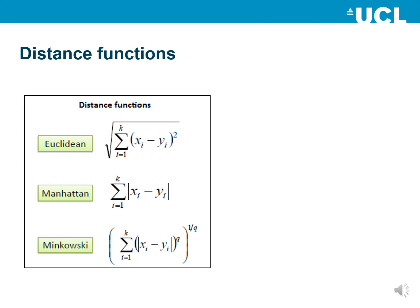The Manhattan distance is also quite often used. The Minkowski distance is in fact a more generalized formula of the Euclidean distance, where the Euclidean distance can also be expressed within the Minkowski distance if q equals 2.